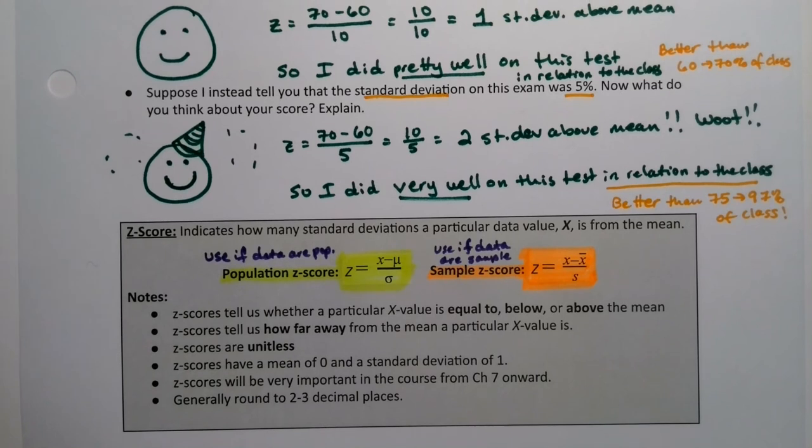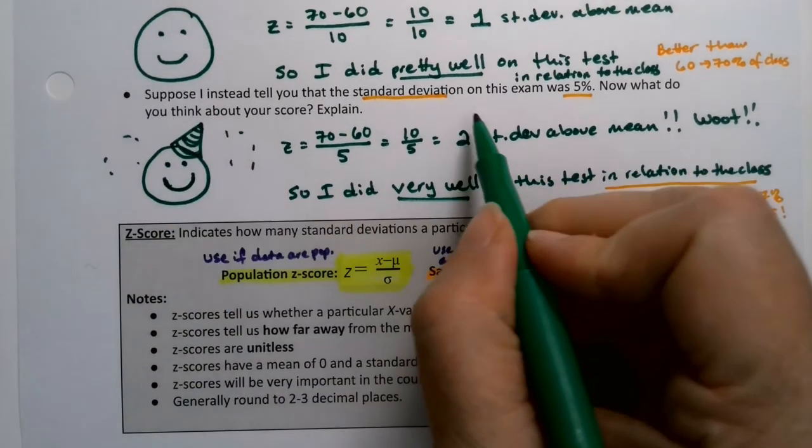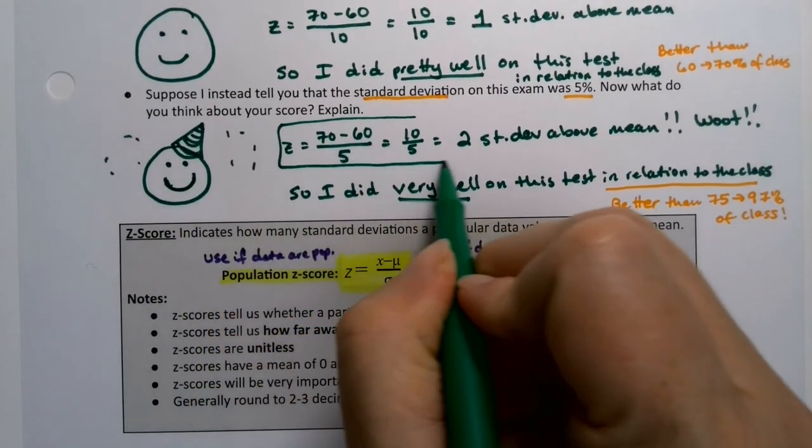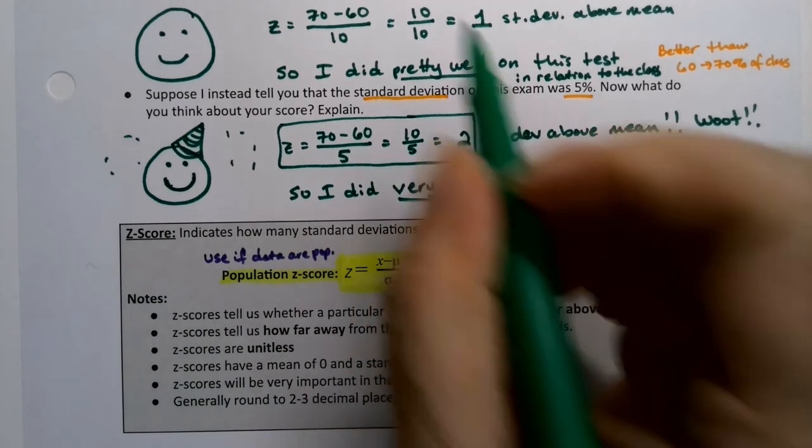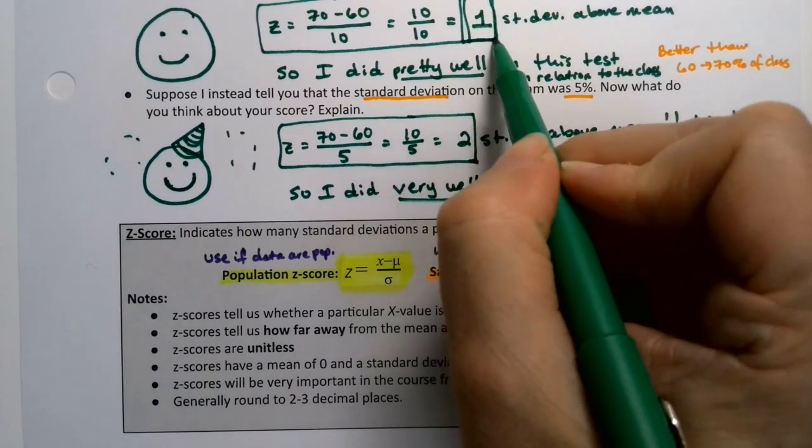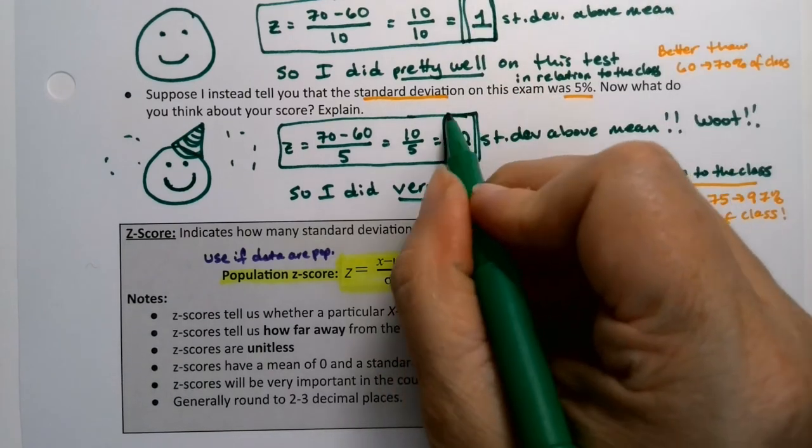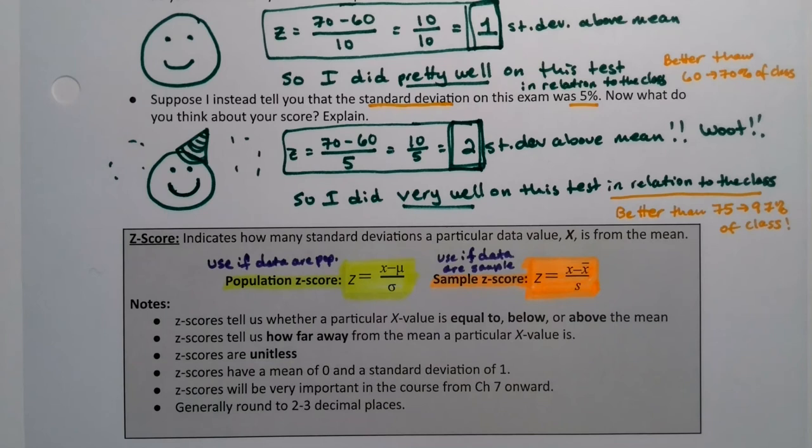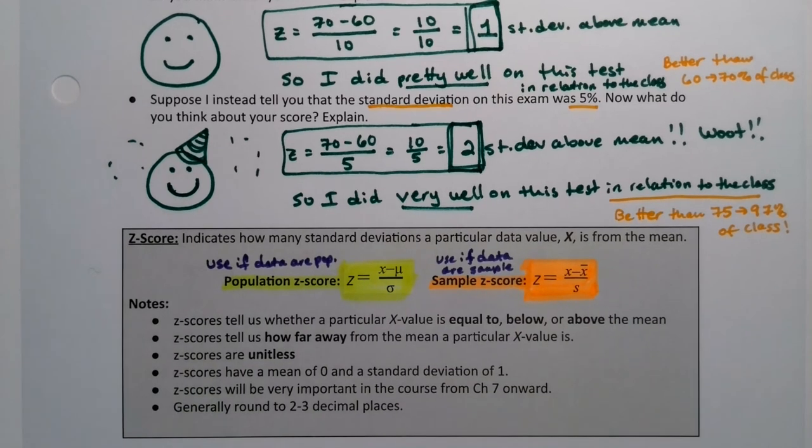All right. Oh, and I should probably box those numbers because those are the Z-scores. So this right here, right, is the Z-score. It's two on that one. It's technically one on this one, right? That's the actual number. The other work is just how to get it.